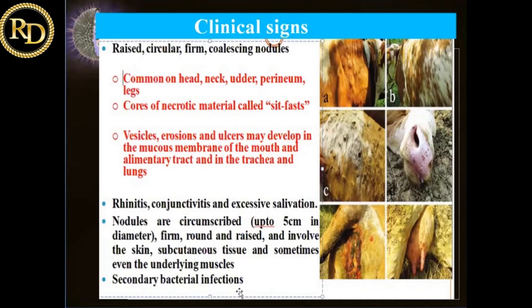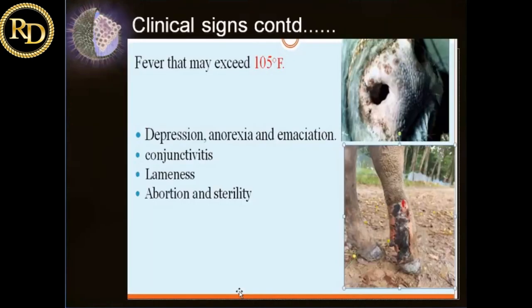The infected animals are kind of incubators for passing infection to other animals. One very common feature we found was lameness, because these pustules were very much in the region and because the animal was continuously licking that area, it led to severe laminitis. There were severe cases of lameness and animals were not able to stand.